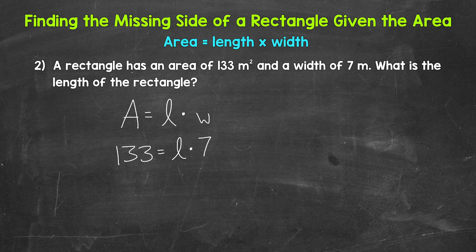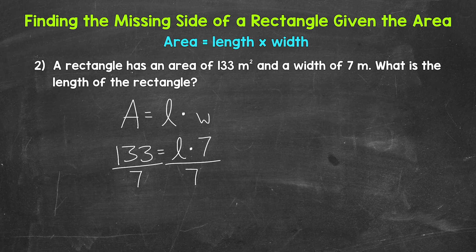We need to isolate L — get L on one side of the equation by itself. L is being multiplied by seven, so we need the inverse operation: division. Divide the right side of the equation by seven. Whatever we do to one side of an equation, we must do to the other, so divide the left side by seven as well. The sevens on the right side cancel each other out, so L is now isolated, and equals 133 divided by seven on the left side.